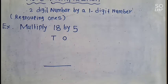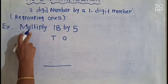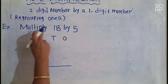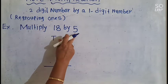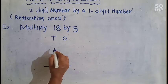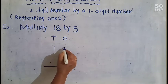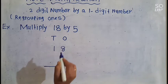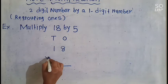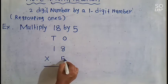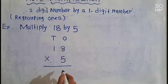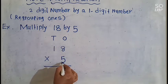Let's see another example of regrouping 1s. Multiply 18 by 5. Write this in the column — 18 is a 2-digit number, 18 × 5. So we have to do the 1s multiplication first. Let's start.